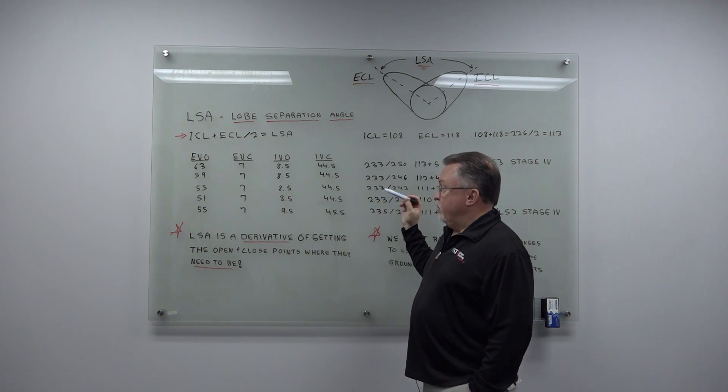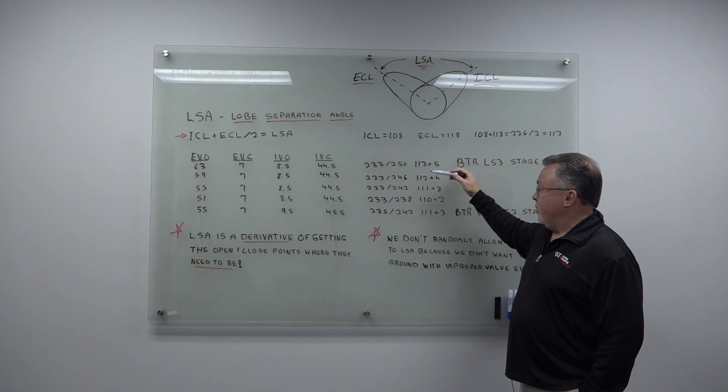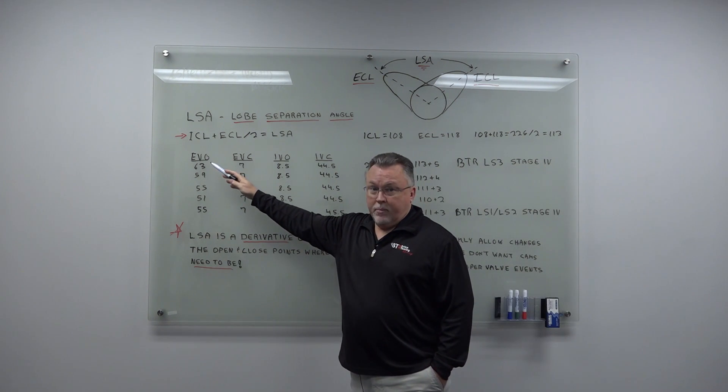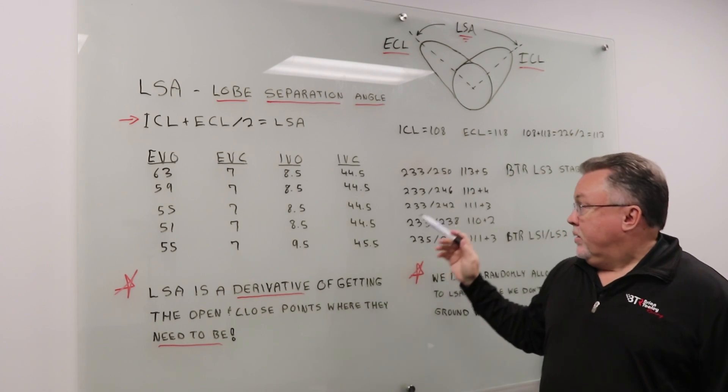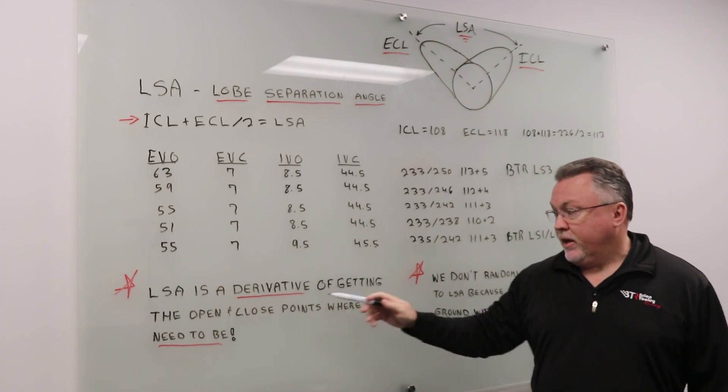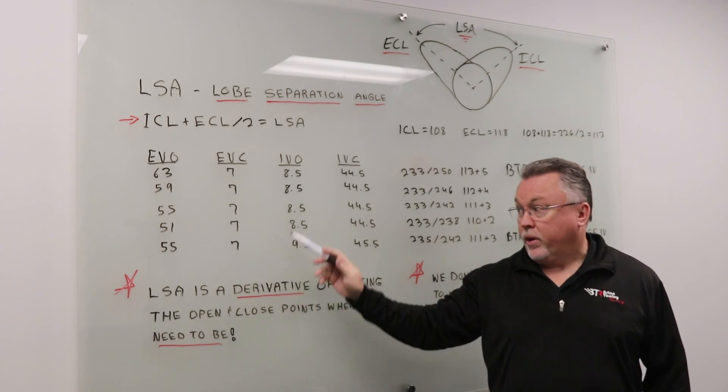So it's very important to not design a cam based on LSA. It's important to design a cam based on what the engine tells you it likes. Lobe Separation Angle is a derivative of getting the open and close points where they need to be.